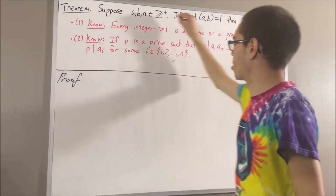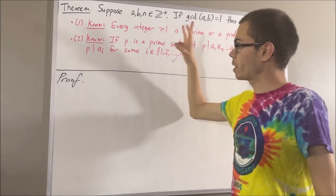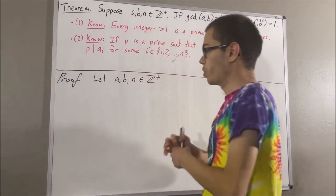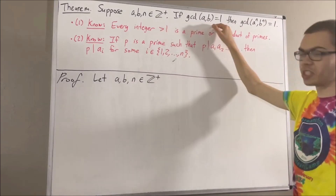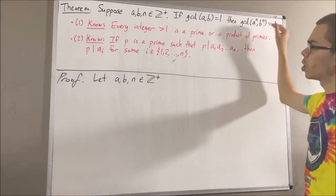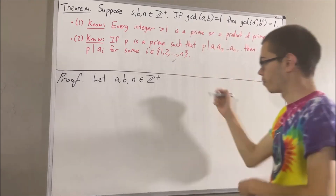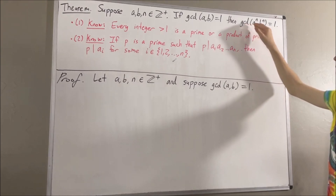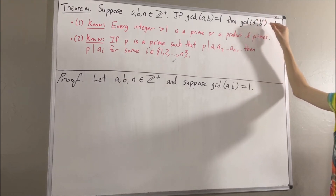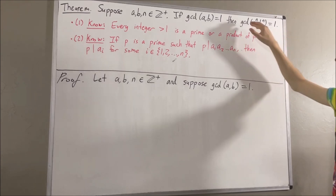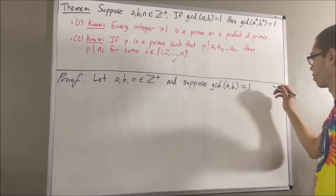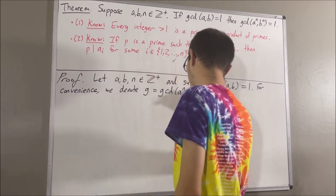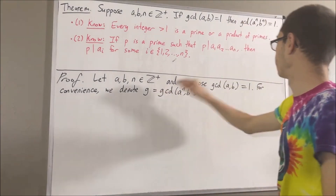Now let's get into proving this theorem. To start off the proof, let's give ourselves three positive integers a, b, and n. We want to prove if the gcd of a and b equals 1, then this conclusion holds. So let's suppose that gcd(a, b) = 1. The whole goal from here is to prove that the greatest common divisor of a to the n and b to the n is equal to 1. For convenience, let's denote this quantity by the letter g. So we want to show that g is equal to 1.